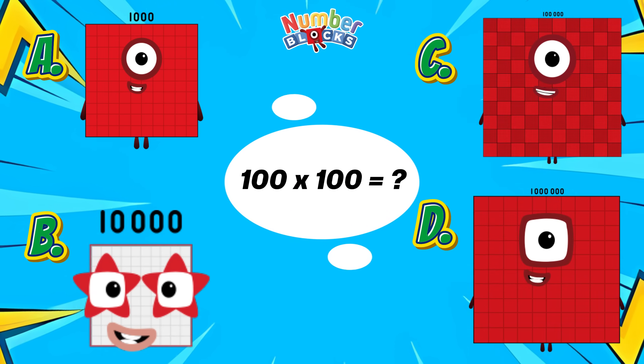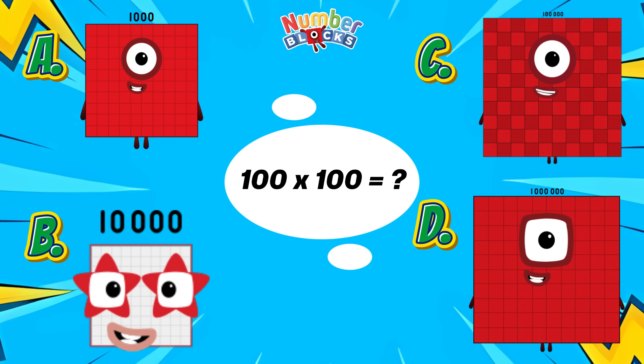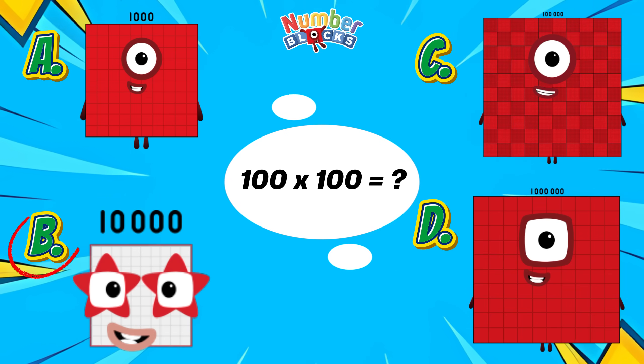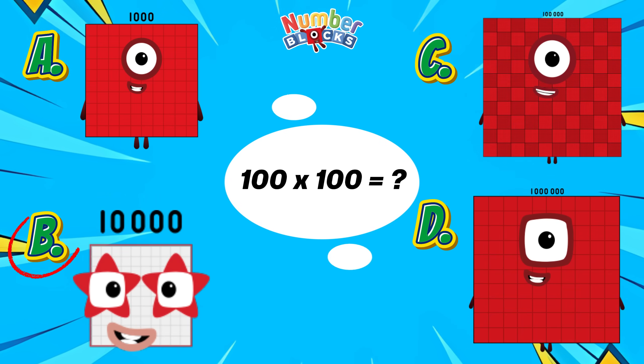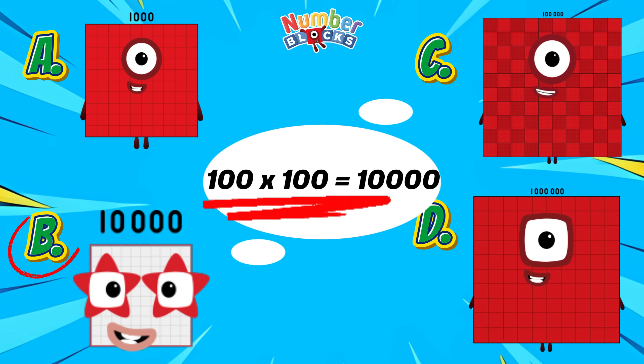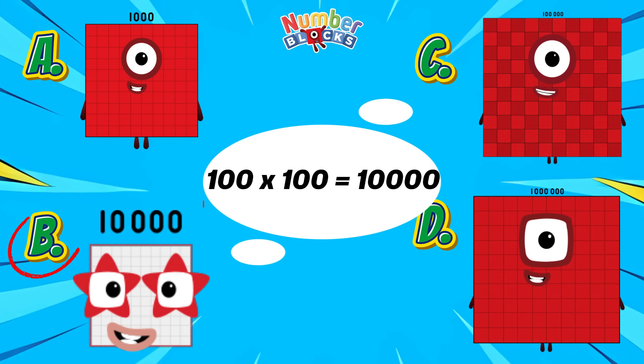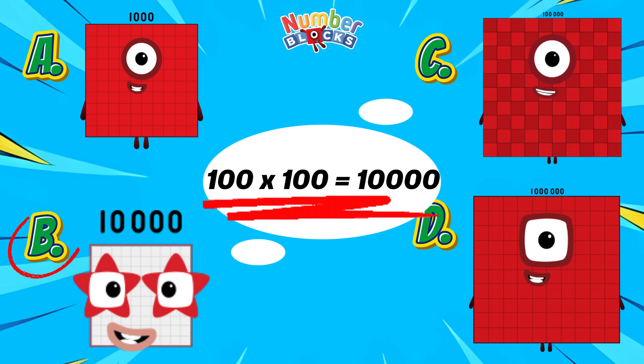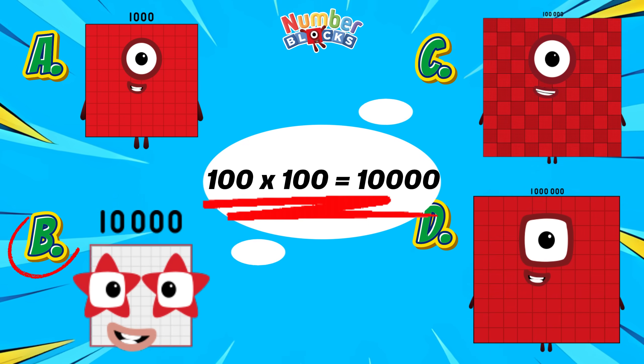And the right answer is letter B. 100 multiplied by 100 is equals to 10,000.